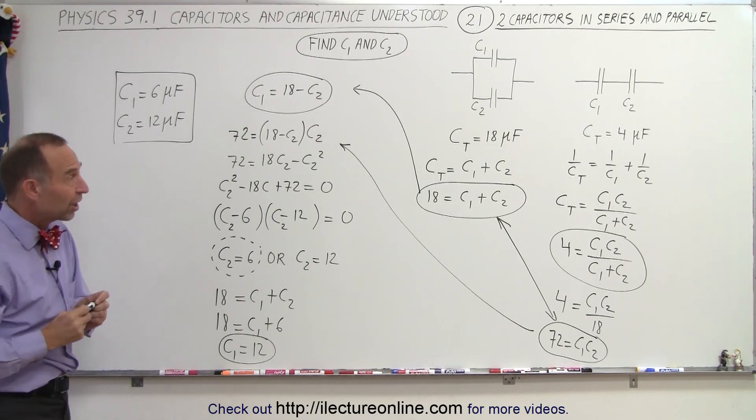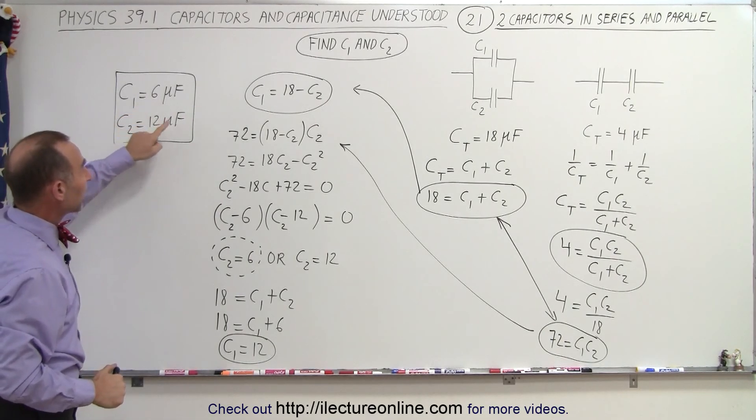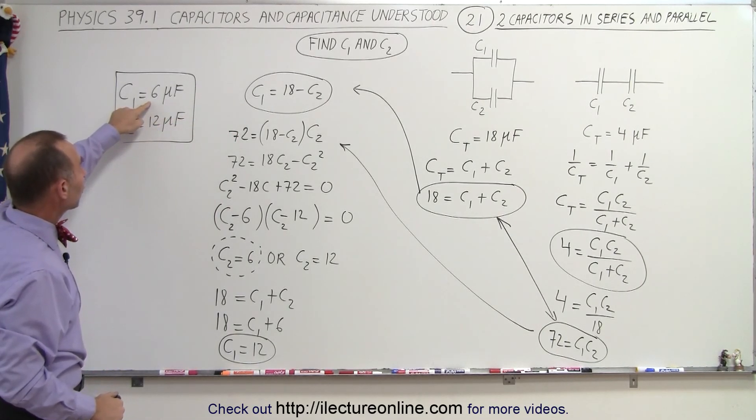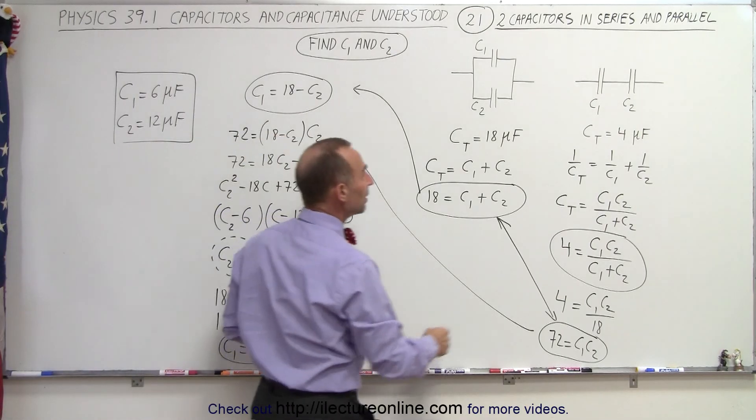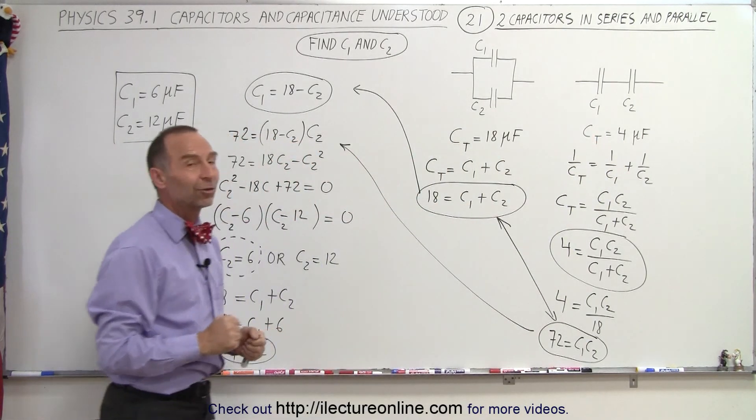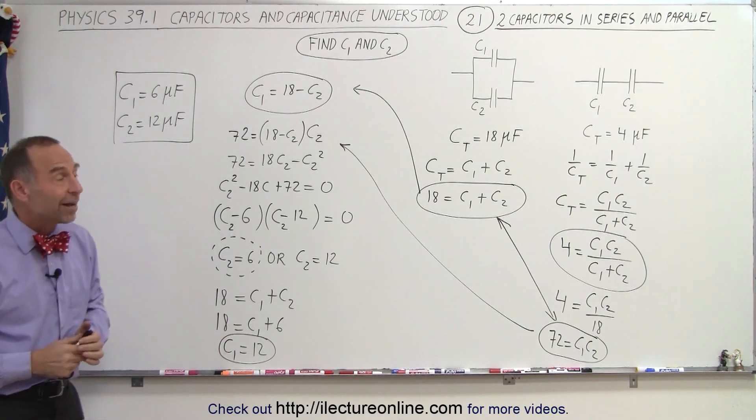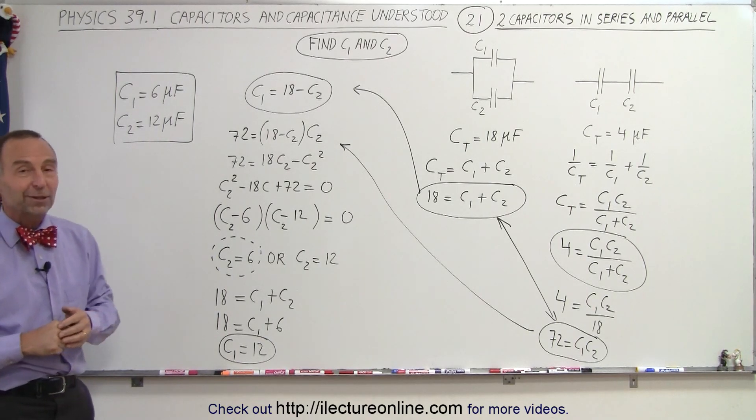And if you quickly want to check, add them together, you get 18. Do the product over the sum. Six times 12 is 72 divided by the sum, which is 18. 72 divided by 18 does indeed give you 4. It looks like it checks. And that's how you find the solution to this particular problem.